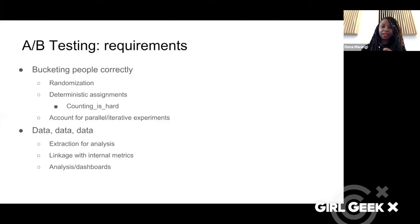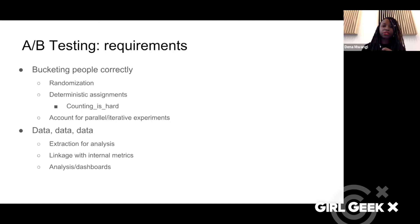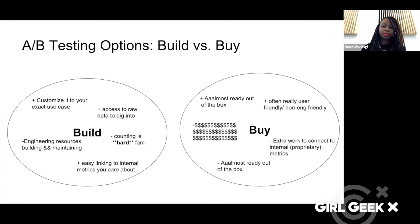As you scale out your experiments, you'll also want to account for parallel or iterative experiments. If a user is going to be exposed to multiple parts of your site, you want to be very intentional about what you're showing them. For the data side, think about how you're getting data out for analysis, how you're linking it to your internal metrics — like with the Netflix example, they really care about people actually watching the show and how much paying users are paying them. You also want to think about what your analysis looks like — do you need dashboards to make it easier for your team?